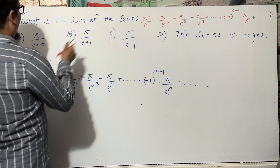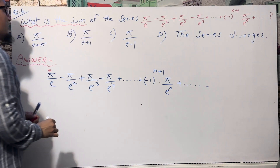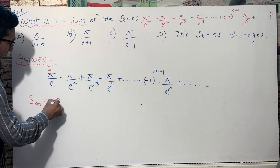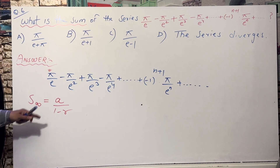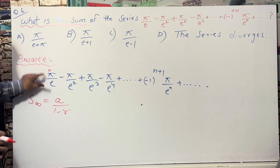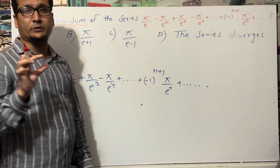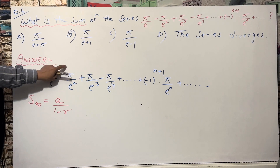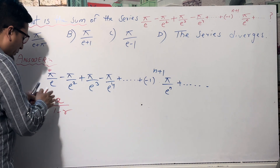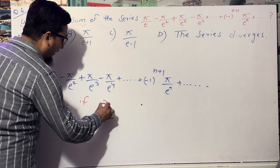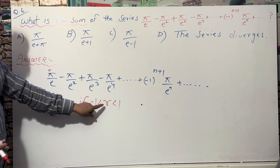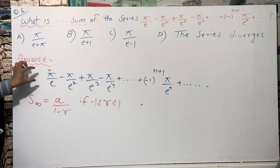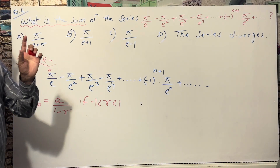For an infinite geometric series, the sum formula is S = a / (1 − r), where a is the first term and r is the common ratio. The series exists — meaning the sum converges — only if the value of r satisfies −1 < r < 1. This is a very important condition.